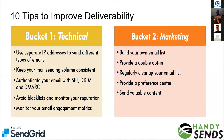Deliverability is very complex. On the technical side, we need separate IPs for different types of emails, maintain consistent volume, and authenticate SPF, DKIM, and DMARC to avoid blacklists. We continuously monitor email engagement metrics, and if something seems wrong, we reach out to support to understand and fix the issue. On the marketing side, we should build our own email list with double opt-in, regularly clean the list with a preference center, and always send valuable content — not spammy content.